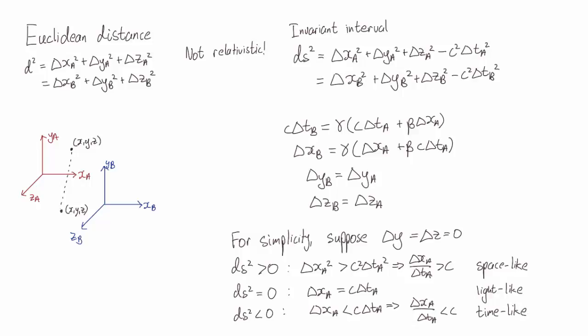The reason for calling these events space-like and time-like is you can show if two events are space-like separated, you can find a reference frame where they happen at the same time, but at different points in space. Meanwhile if two events are time-like separated, you can find a reference frame where they happen at the same place, but at different points in time, one after the other.